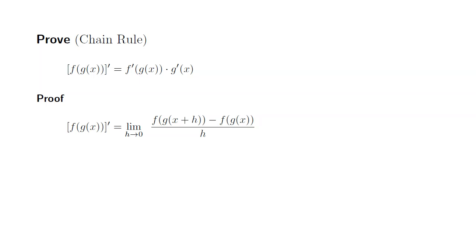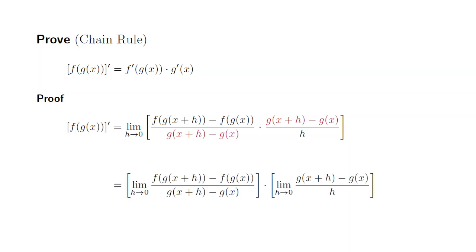All right, so I'm going to multiply top and bottom by g of x plus h minus g of x, which looks like this. Then I'm going to switch the denominators. Then I'm going to distribute the limit to both quotients, which looks like this.